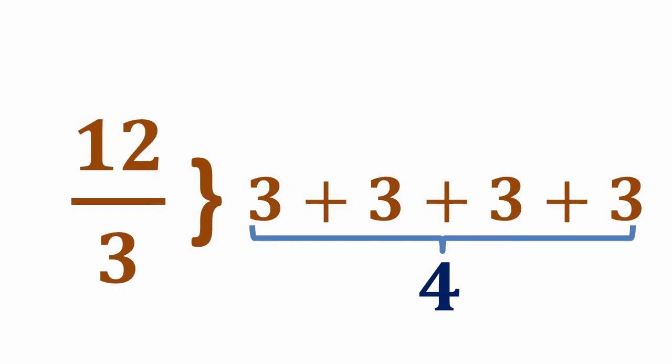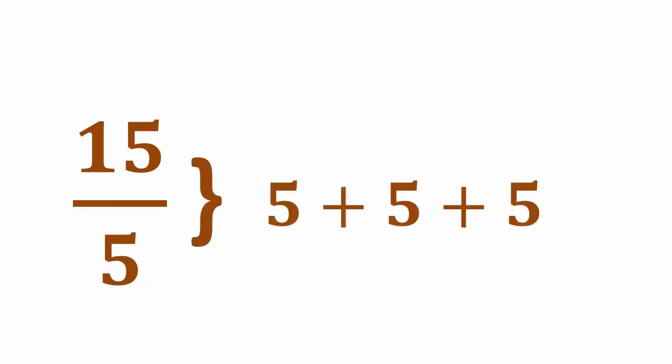Or if we subtract 4 3's from 12, we will get 0. The next example is 15 by 5. So how many 5's do we need to make 15? It's 3 5's, and the answer is 3.